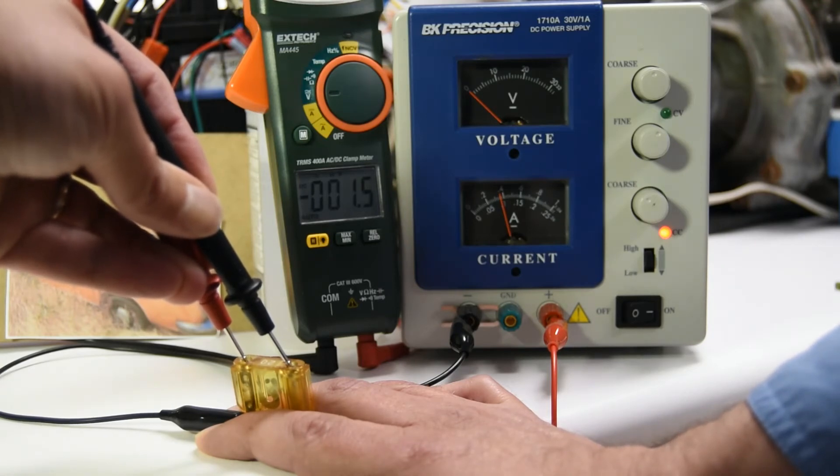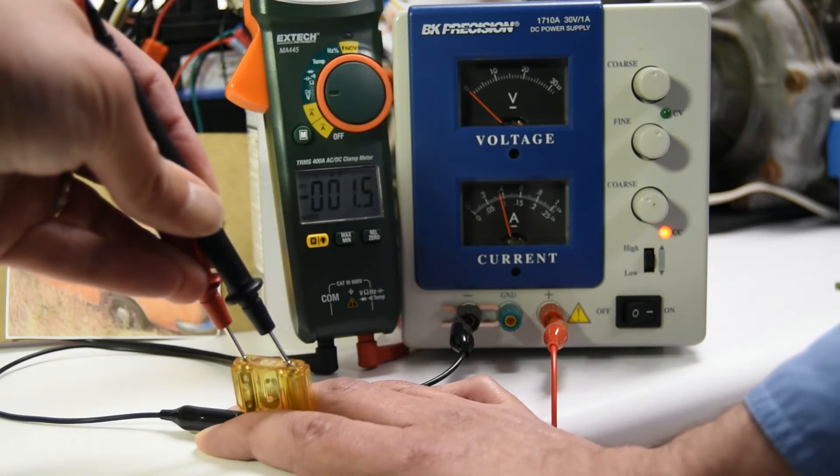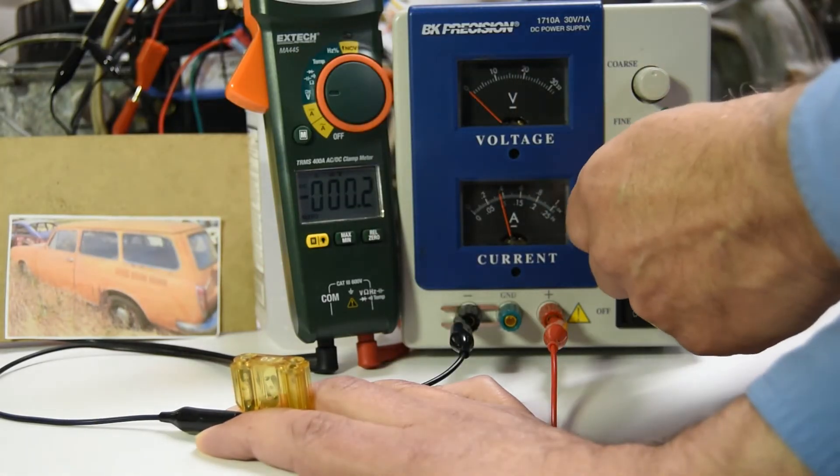I get minus 1.5. So that's a difference. Before I got minus 0.6, now I got minus 1.5. Put some more current through it.